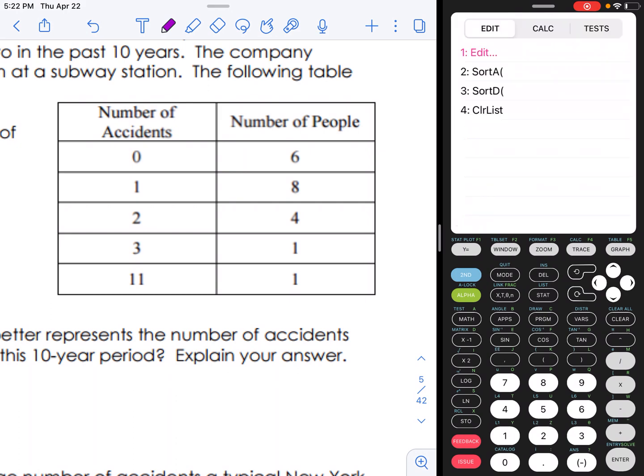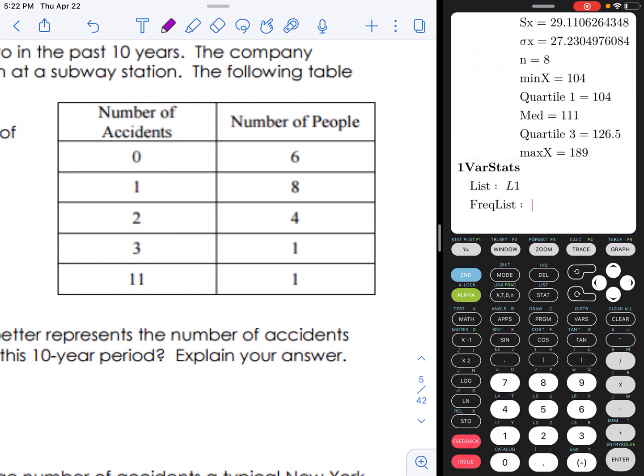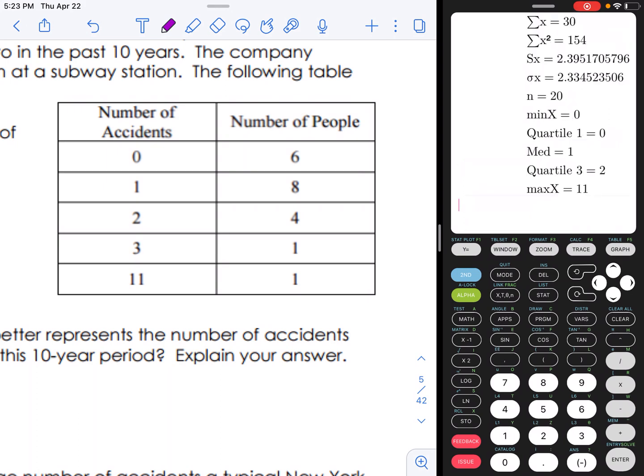And then we're going to go ahead and hit stat again to get those statistics. The only difference now, after I do one variable stats, is I actually have a frequency list. The frequency list is my second column. That's telling me the number of people had the certain number of accidents. So once I type in the frequency list, I am going to do the blue second button, followed by number 2. And you can see, looking at number 2, you can see above it, it says L2. That's what my frequency column is in the problem. What I typed it in on the calculator.